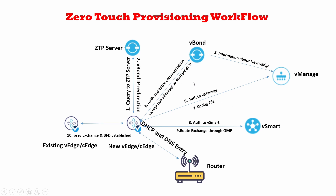After authentication, vBond sends the new vEdge the IP addresses of vManage and vSmart. Simultaneously, vBond notifies vManage that a new router has come into the picture so vManage is ready for the incoming authentication. The new vEdge then sends its authentication message to vManage, which performs its checks, compares the vBond notification, and upon successful authentication sends the full configuration file to the vEdge, which downloads it, saves it, and reboots with the new configuration.